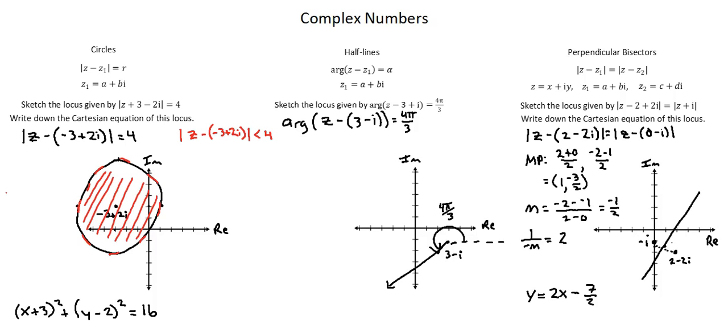If we were dealing with a less than or equal to scenario, then along with the points inside the circle, we'd have a solid line on the circle to show that the points on the circle would also be included in the locus.